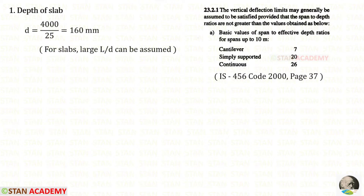When we use the span we have to be very careful. The short span is given as 4 meter, which we convert into millimeters. For the effective depth d we will get 160 millimeter.